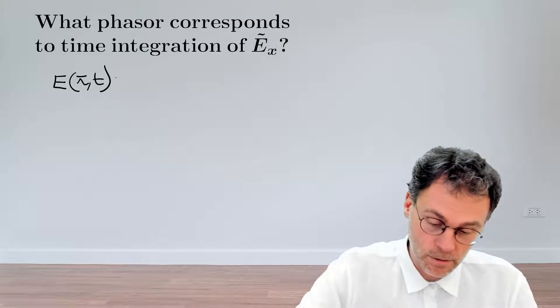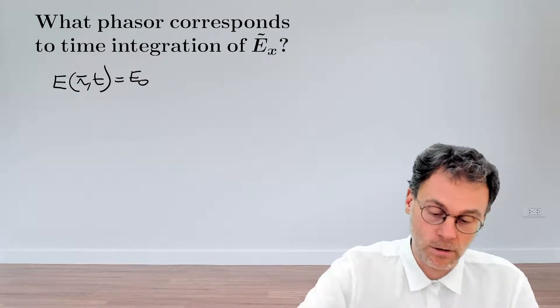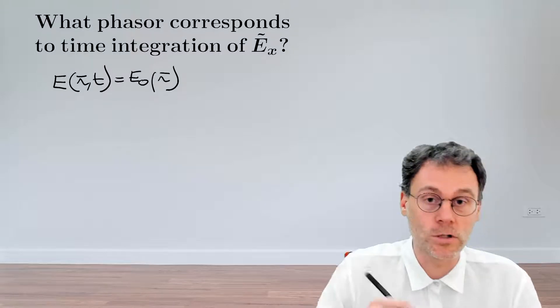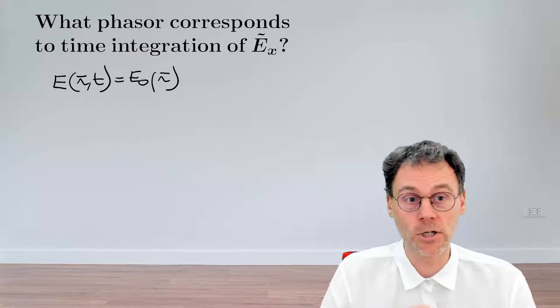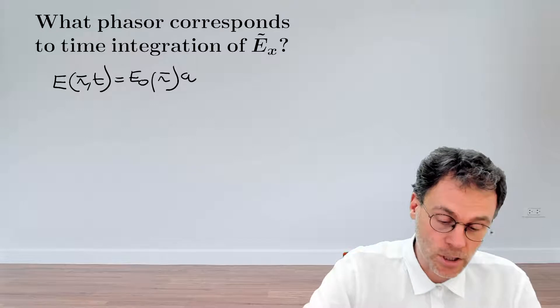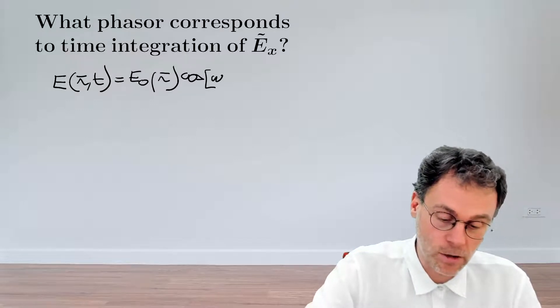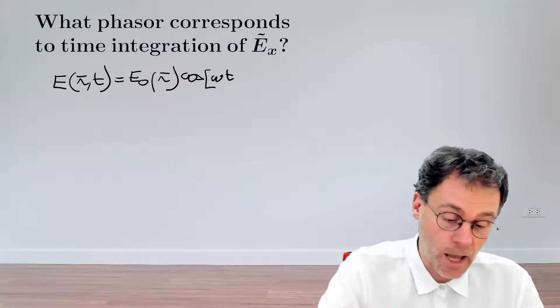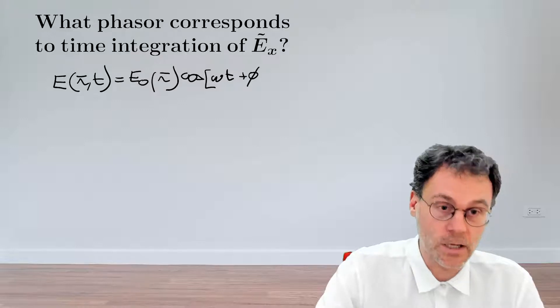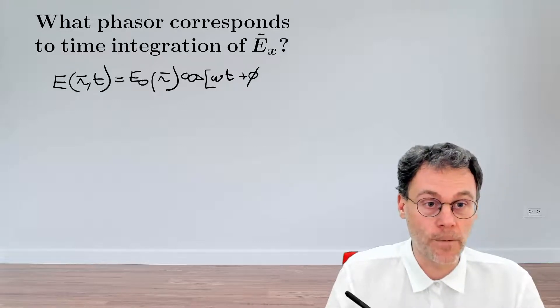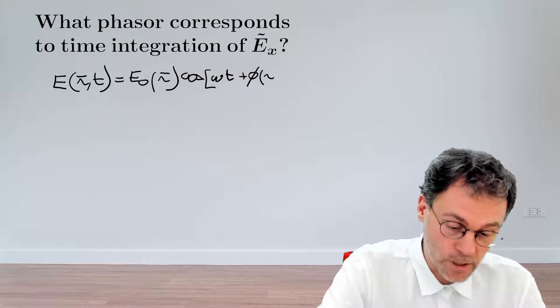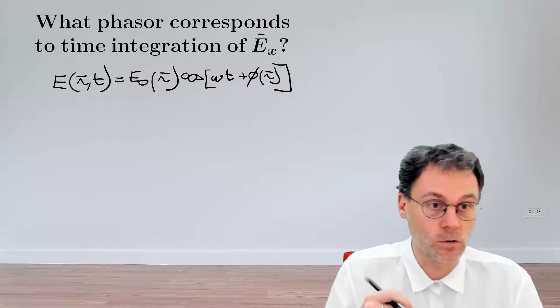that varies as a function of the spatial coordinates and the temporal coordinates according to some sinusoidal oscillation with a certain amplitude. That amplitude is called E₀, and that amplitude can, of course, depend on the spatial position, and then it oscillates with a certain angular frequency, omega, which is fixed, and it can, of course, have a certain phase, which can, again,